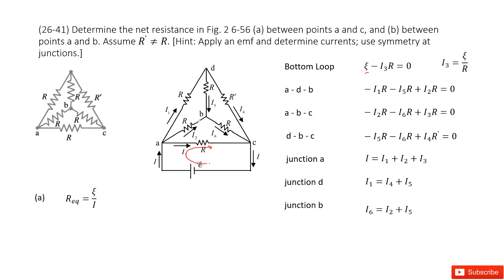Then we look at loop ADB. The current goes through this R — voltage decreases — so minus I1R, then minus I5R, then plus I2R, because this current is in the opposite direction with this loop. So we get that equation.